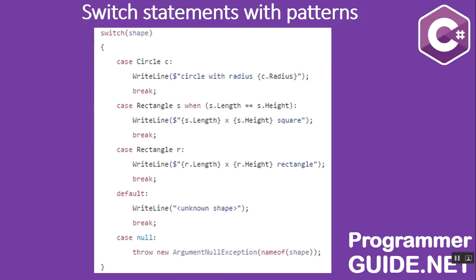Switch statements with patterns. C# 7.0 has generalized the switch statement so that you can switch on any type, not just primitive types. Patterns can also be used in a case clause, and case clauses can have additional conditions on them. In the example, it verifies if the shape is of type circle — if yes, the shape is assigned to C and the value of C.radius is printed.